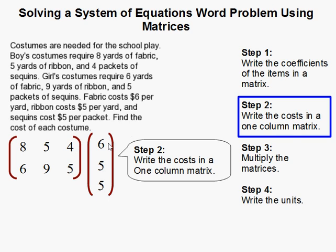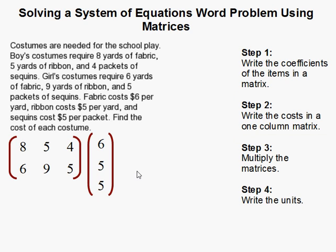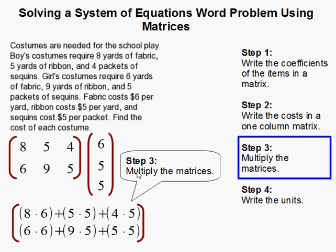And since they correspond, if you've done matrices before, you'll know that you can then multiply them. So you multiply the cost matrix times the coefficient matrix. And that's what we do here.